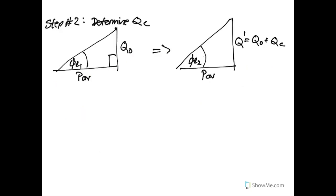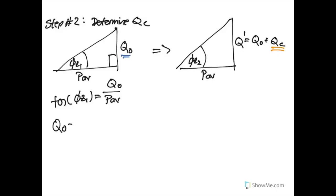Step two is to figure out how much reactive power we need from the capacitor. Going backwards, the tangent of φZ1 equals the original reactive power over the real power. There's nothing we can do about the real power — that's the real resistive elements of the circuit — but now we have an expression for the original reactive power.